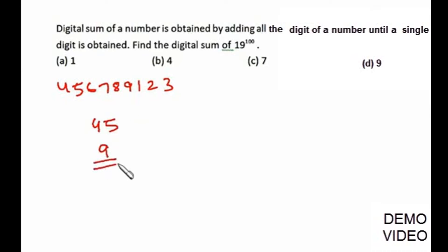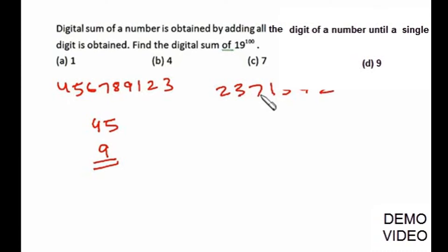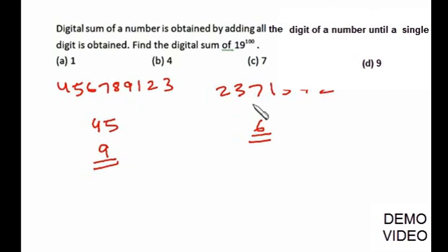Similarly, for the number 2371542, the digital sum is: 2+3=5, 5+7=12, 12+1=13, 13+5=18, 18+4=22, 22+2=24, giving 2+4=6. Comparing both cases: the first number is a multiple of 9, so its digital sum is 9. The second number is not a multiple of 9, so its digital sum is different.